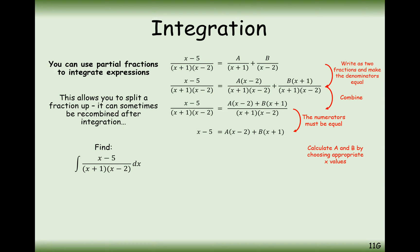Let's start by substituting in x equals 2. That will make the (x minus 2) bracket equal 0 and the A coefficient will disappear. So 2 minus 5 gives minus 3, which equals 3B. B must therefore equal minus 1.